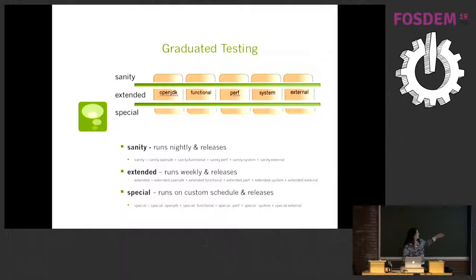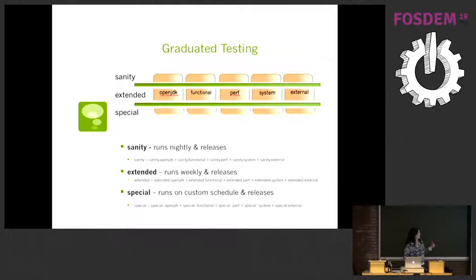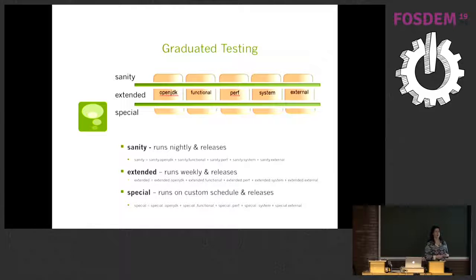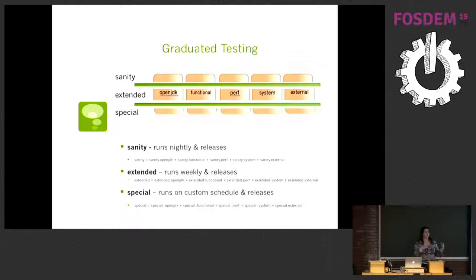At AdoptOpenJDK, the sanity suite runs nightly and on releases. The extended suite runs weekly and on releases. Special tests run on custom schedules — typically tests that require special hardware or tests where we want to push a system to its limits, so we need to set aside dedicated time.